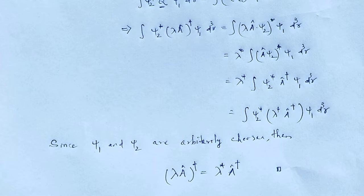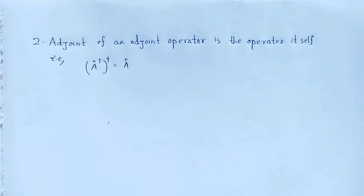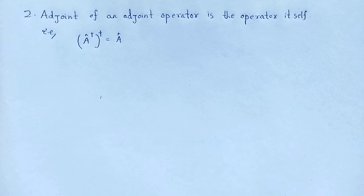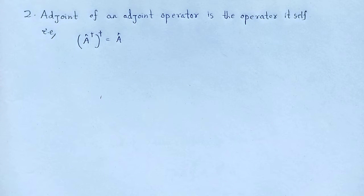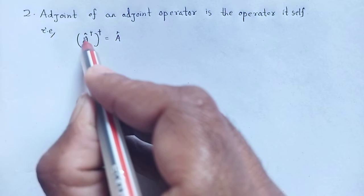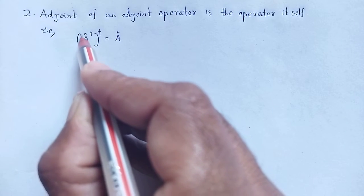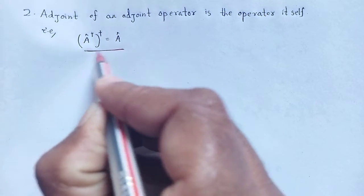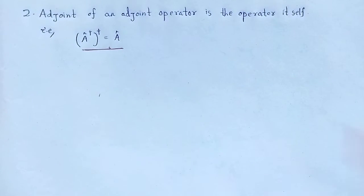Property number 2: adjoint upon adjoint of an operator is the operator itself — that is, the adjoint of the adjoint operator is the operator itself.